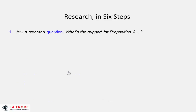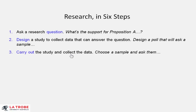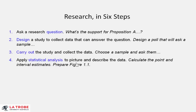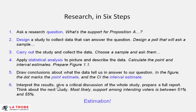Here's the research process in six steps. First, we ask a question. We design a study to answer that question. We carry out the study and collect data. Then we apply statistical analysis and draw a picture — for example, our figures with the 95% confidence interval. A lot of this book will discuss how we do that in various different situations, always within this general research framework. Then we draw conclusions about what the point and interval estimates are telling us, interpret the results, and give a critical discussion of the whole thing — how we set it up, how we chose our sample, did it work as we expected, and what we make of the results.